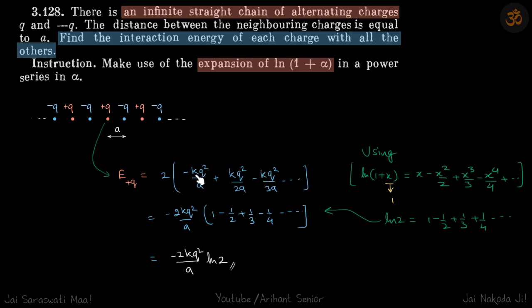If you take minus KQ squared by A common, you'll be left inside with 1 minus 1/2 plus 1/3 minus 1/4 and so forth.